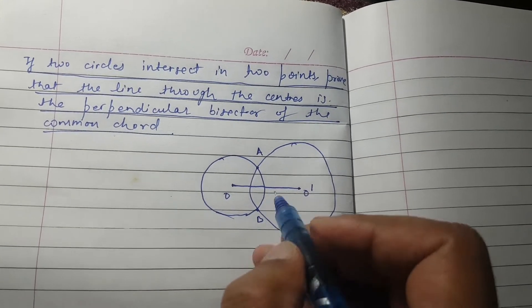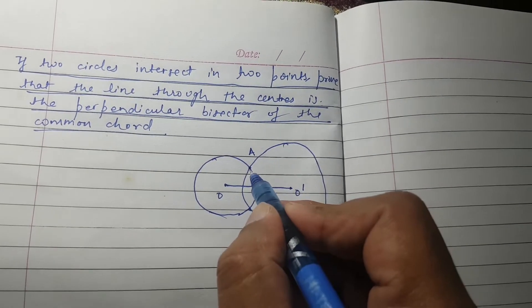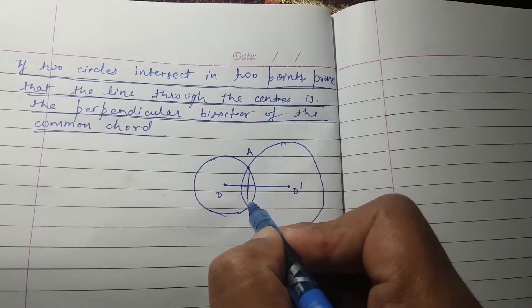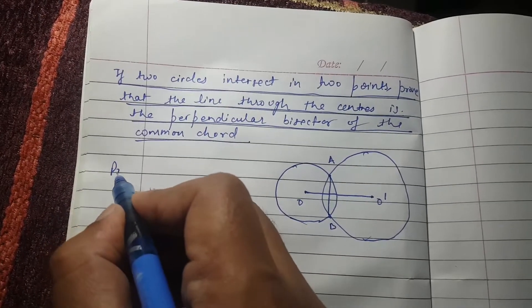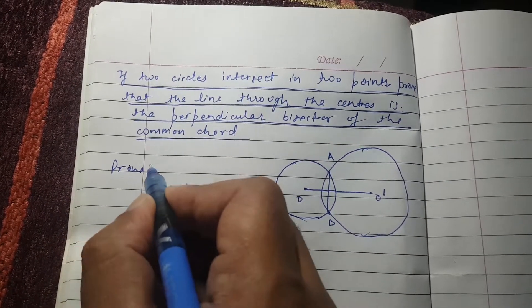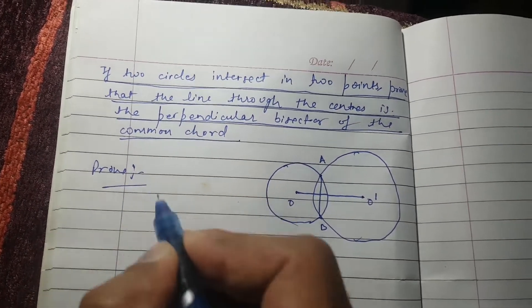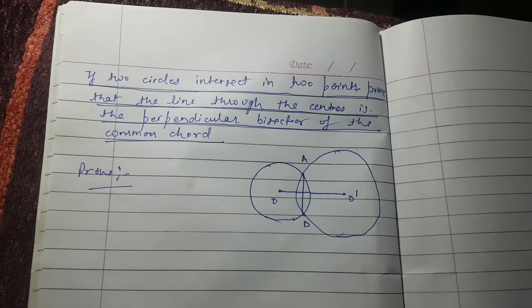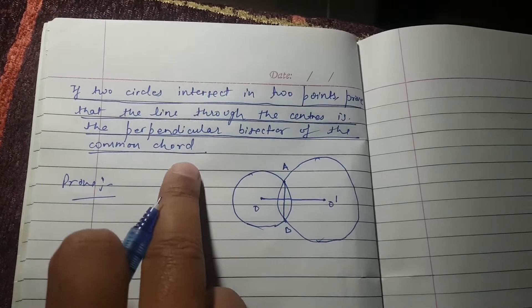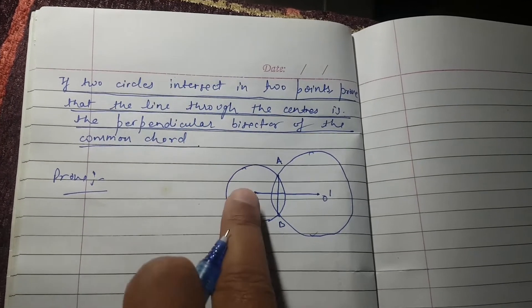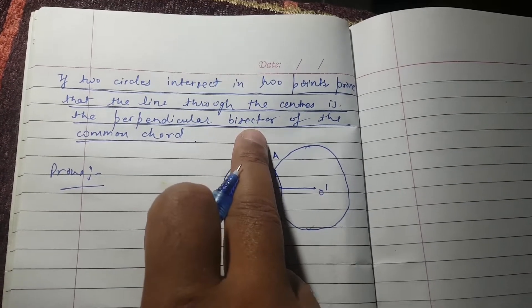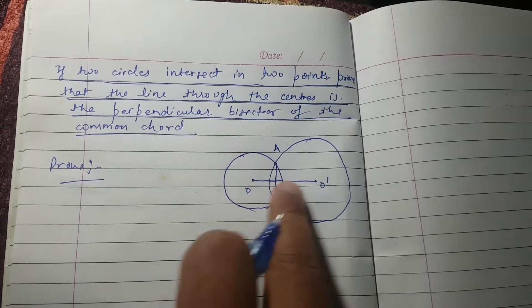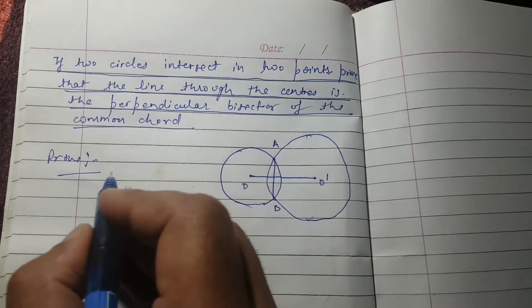The common chord will be AB. So we have to prove that the line through the centers is the perpendicular bisector of common chord AB.